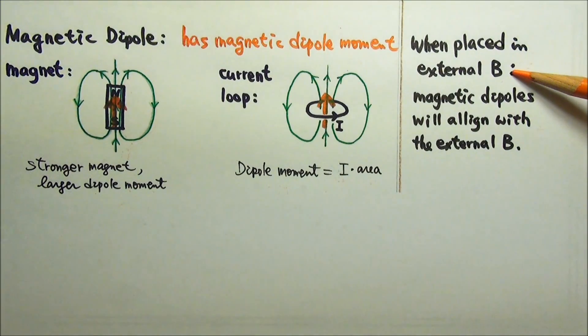By external magnetic field, we mean a magnetic field produced by some other magnet or some other current.